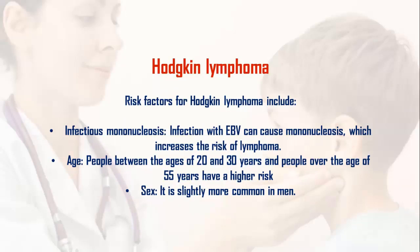Risk factors for Hodgkin lymphoma include: 1. Infectious mononucleosis: infection with EBV can cause mononucleosis, which increases the risk of lymphoma. 2. Age: people between the ages of 20 and 30 years, and people over the age of 55 years, have a higher risk.